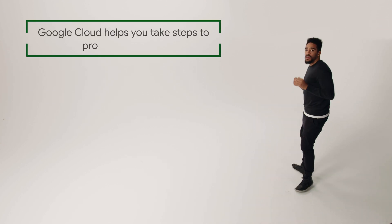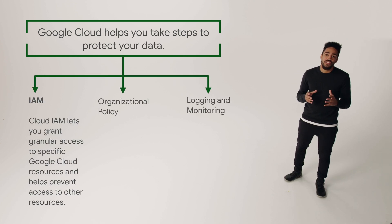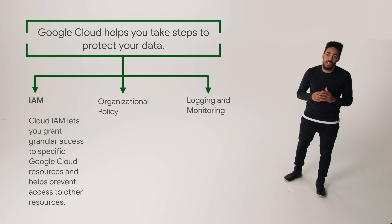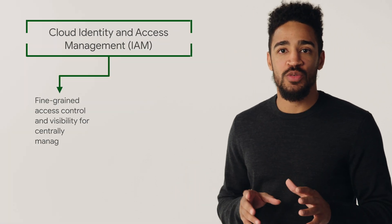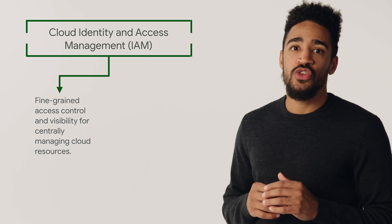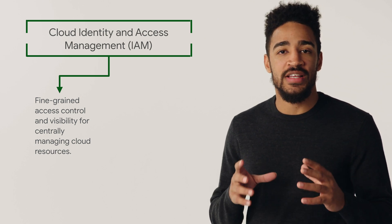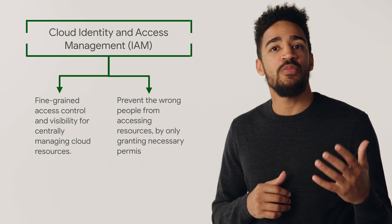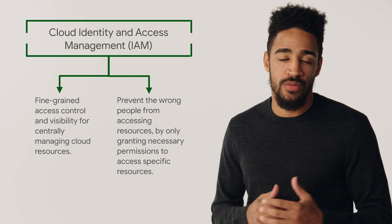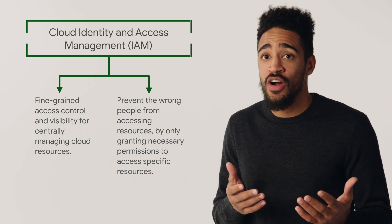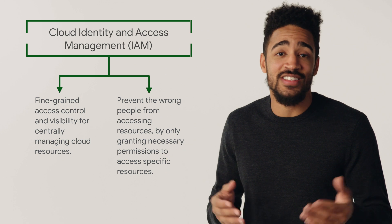So how do we prevent problems with data we store? Cloud IAM lets you grant granular access to specific Google Cloud resources and helps prevent access to other resources. Cloud IAM lets you adopt the security principle of least privilege, where you only grant necessary permissions to access specific resources. This works to prevent people from accidentally or maliciously accessing data they shouldn't — for example, IAM could let you keep UI developers from accessing credit card databases they didn't need to access in the first place.